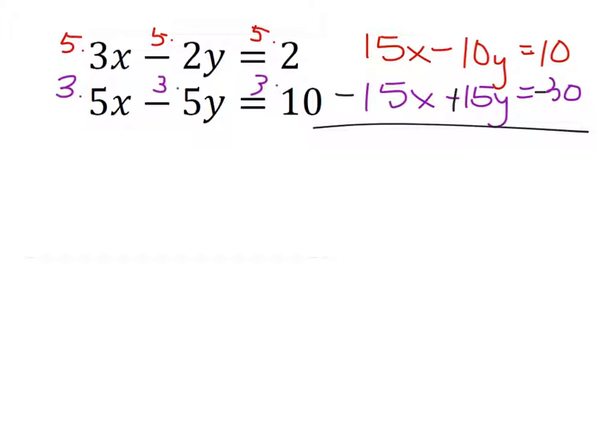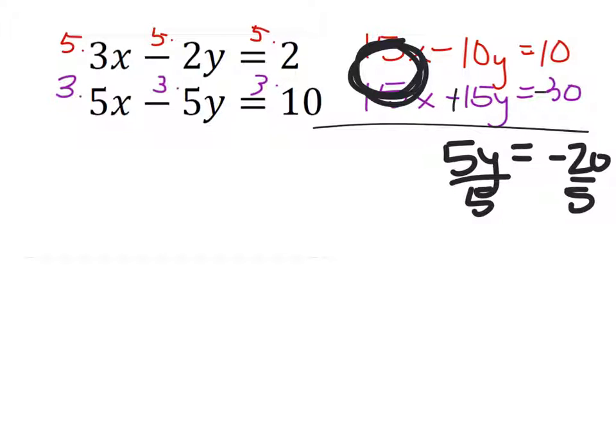Notice, 15x minus 15x is 0. We can erase these to show that these are canceled out, removed, taken away, zero paired. Now, negative 10y plus 15y would give us positive 5y. And 10 minus 30 would be negative 20. If we divide both sides by 5, we'll have the value of y, which is negative 4.